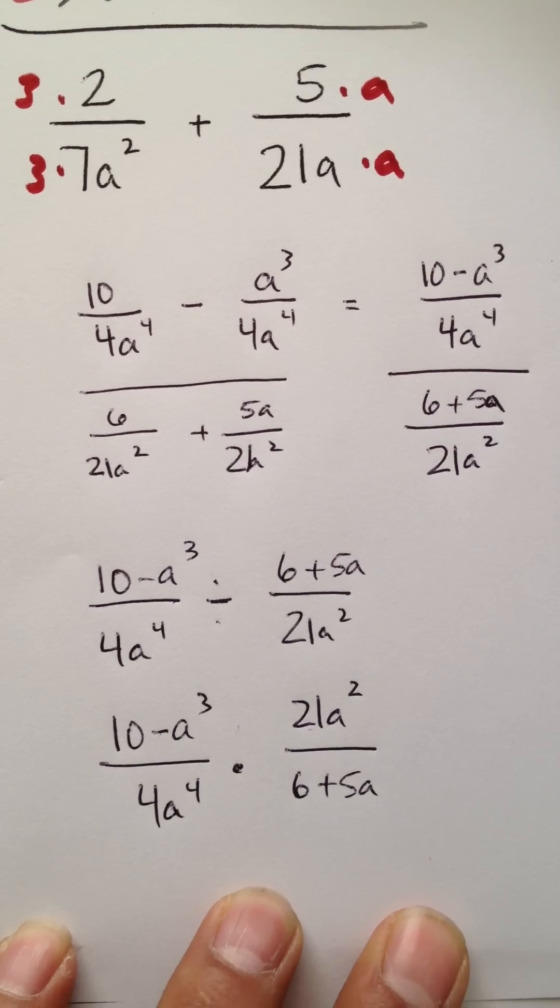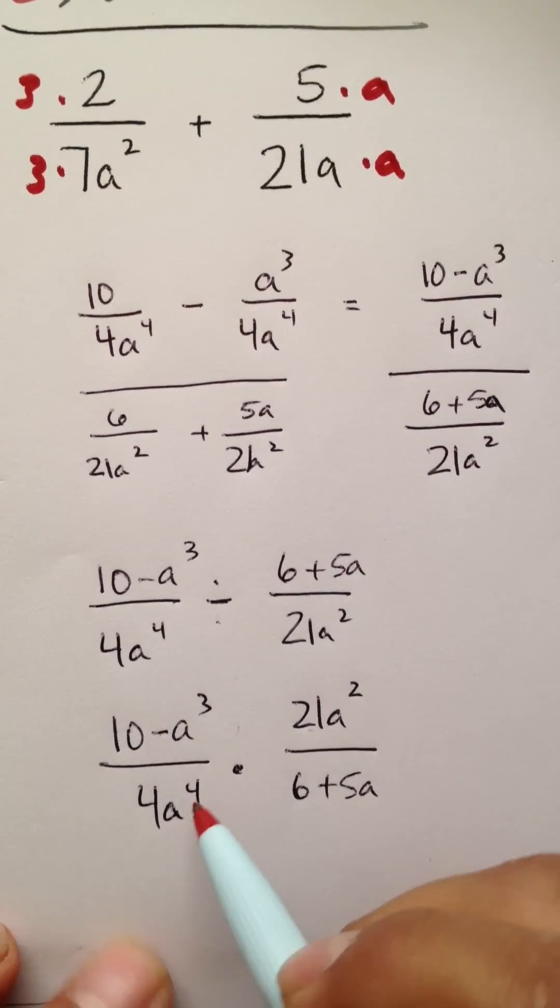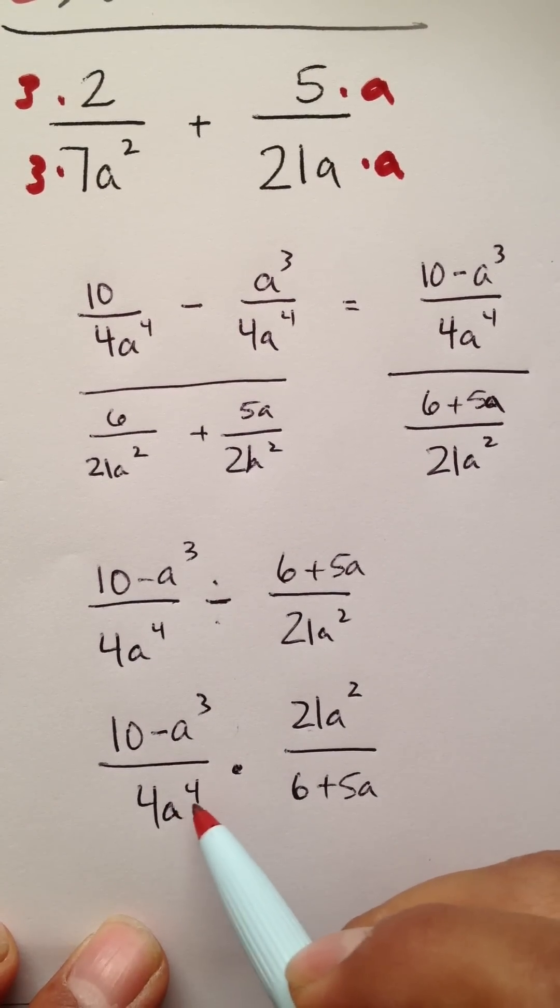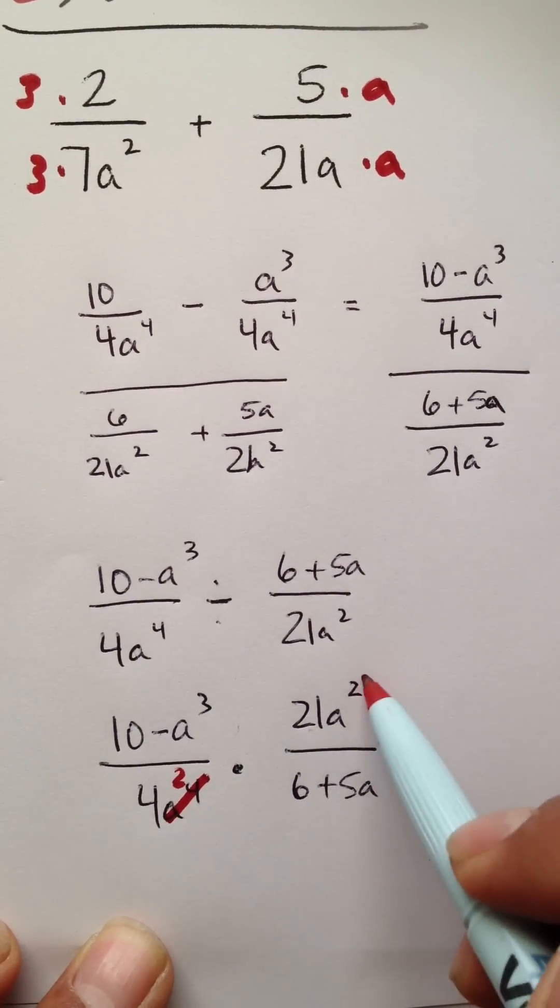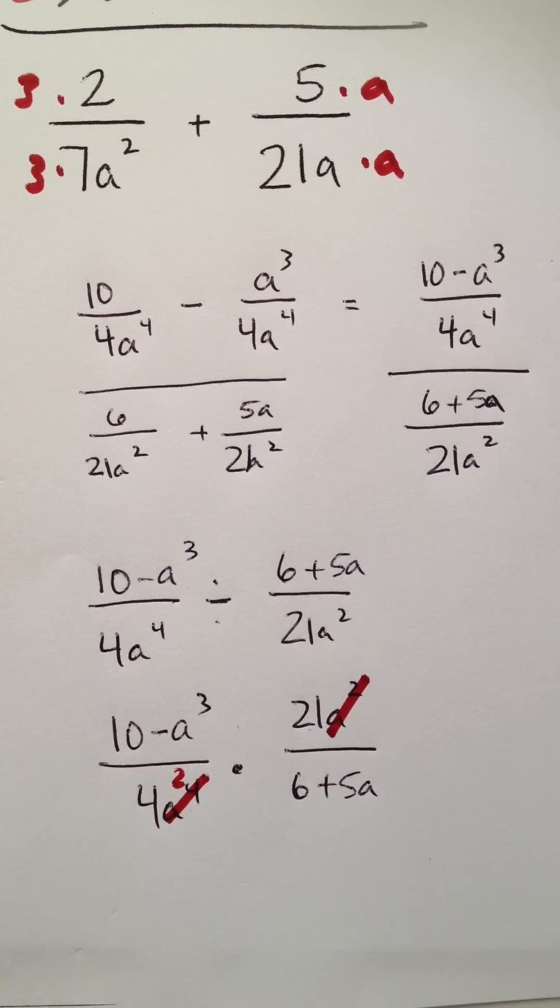This becomes, since there are four a's, a times a times a times a, four times. If we cross this out, there will only be two of them left over. This one will be completely gone.